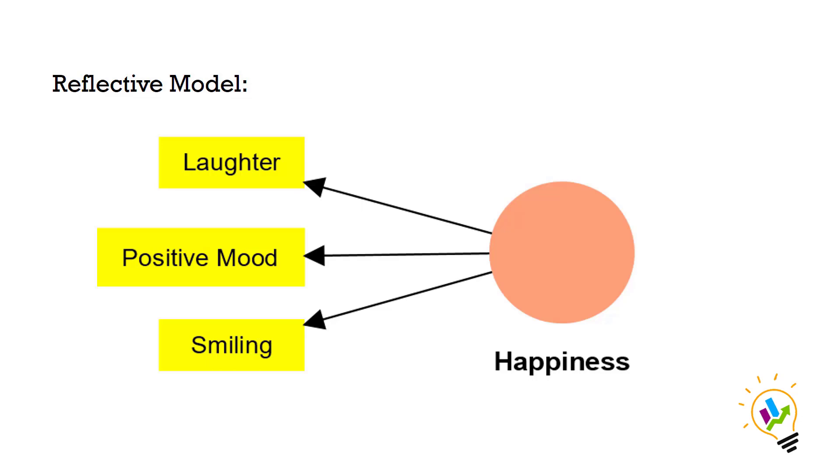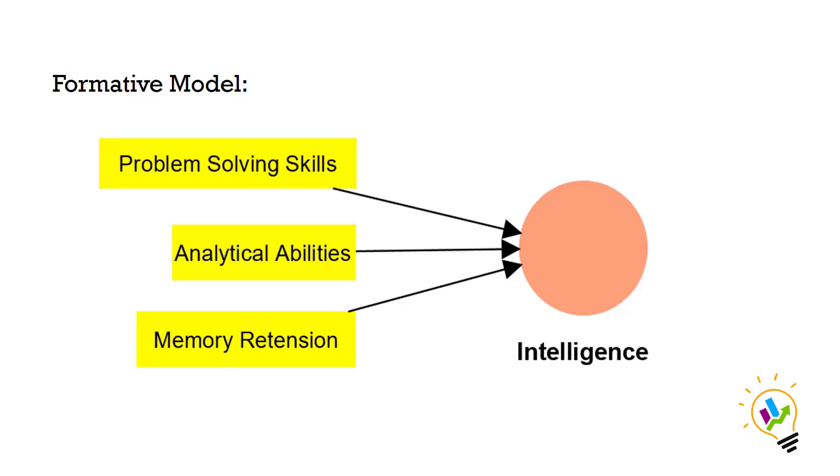Now we will discuss formative model. The formative model is like building something with bricks. It assumes that the observed variables form or create the overall construct, rather than being caused by it. In this model, the observed variables contribute independently to the unobserved construct, and there might not be a common cause for the observed variables.